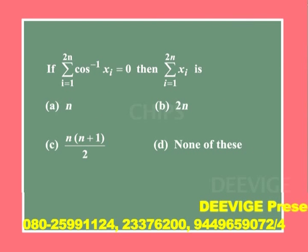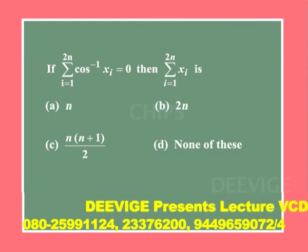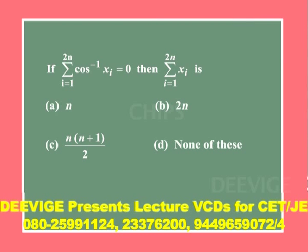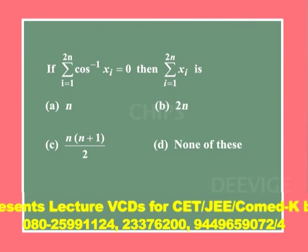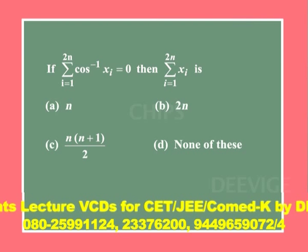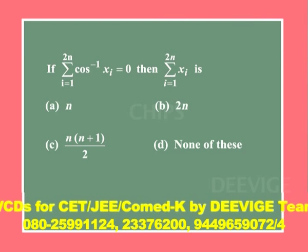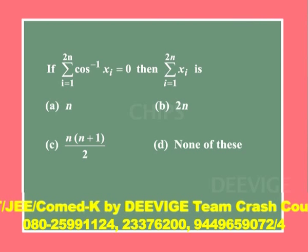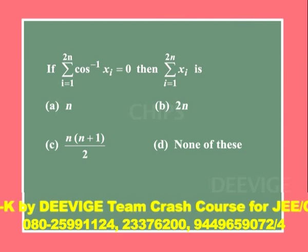Let us take up the next problem. Summation i = 1 to 2n of cos⁻¹(xᵢ) = 0. Then summation i = 1 to 2n of xᵢ equals — Option A: n; Option B: 2n; Option C: n(n+1)/2; Option D: none of these.